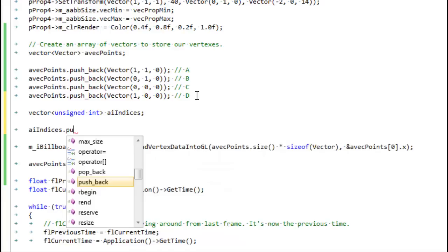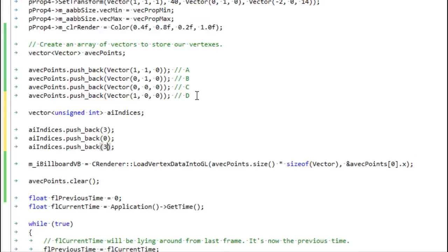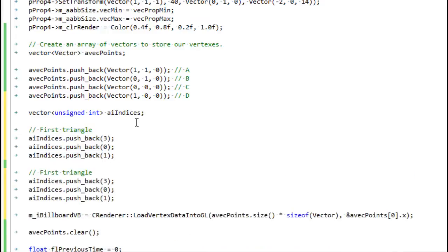Let's push back - we're going to do 3, 0, 1, that's D, A, B. So that was our first triangle. And then 3, 1, 2 - second triangle. That is D, B, C was our second triangle.